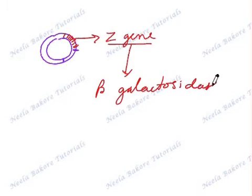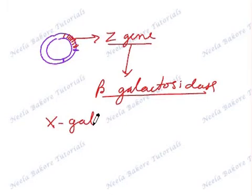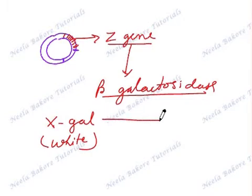This enzyme beta galactosidase is responsible for converting a white substance called X-gal which is white gets converted into a blue product.